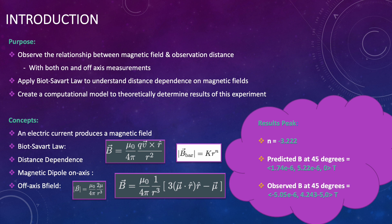A peek into my results shows the distance dependence exponent of negative 3.22 and the predicted versus observed magnetic field vectors at 45 degrees off axis from the magnet as seen in Tesla.